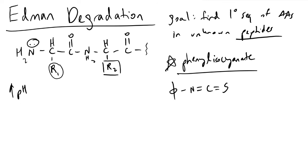What will happen is, under basic conditions, our N-terminal of our unknown peptide will attack the carbon in phenyl isocyanate. This carbon will perform as an electrophile and be attacked by the lone pair on this amine.